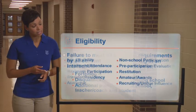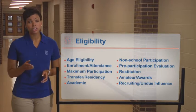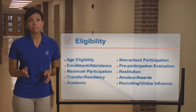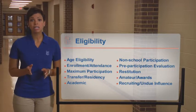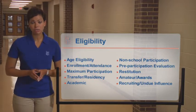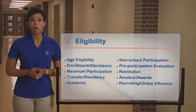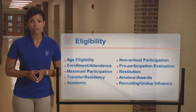Eligibility requirements are likely to vary from state to state, and there may be exceptions and the opportunity for students and their parents or guardians to appeal. This list represents the general rationale for areas addressed by state association eligibility rules. Select each one to learn more.